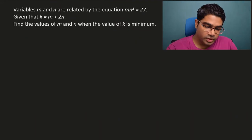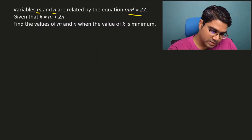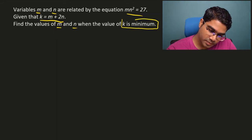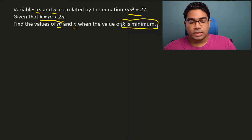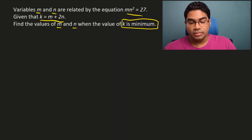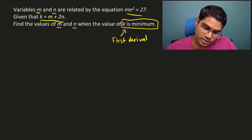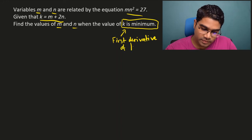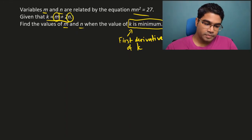Let's look at this question. Variables m and n are related by the equation mn² equals 27. We have another equation for k: k equals m plus 2n. Find the values of m and n when the value of k is minimum. Since k is minimum, remember from the graph — when y is minimum we find the first derivative of y. So we need to find the first derivative of k. But k has two variables, m and n.